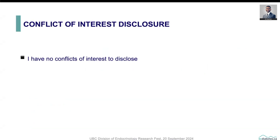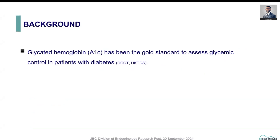I have no conflict of interest to disclose for this particular talk. As you all know, glycated hemoglobin, or A1C, has been the gold standard and the cornerstone of diabetes management for decades, and it has been correlated with macro and microvascular complications, as shown in the landmark trials DCCT and UKPDS.